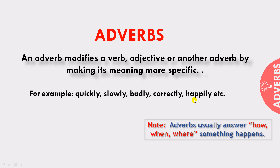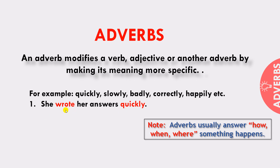اب ہم ان adverbs کو sentences میں دیکھتے ہیں۔ The first example is: 'She wrote her answers quickly.' اس نے answers لکھے — 'wrote' کا مطلب لکھے، verb ہے۔ کیسے لکھے؟ Quickly — جلدی سے۔ تو 'quickly' کا word basically verb جو کہ 'wrote' ہے اس کو define کر رہا ہے، اس کے معنی میں اضافہ کر رہا ہے اور اس کو اور زیادہ clear کر رہا ہے۔ اس طرح سے adverb sentence میں بنیادی طور پر verbs کو modify کرتا ہے۔